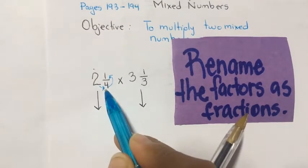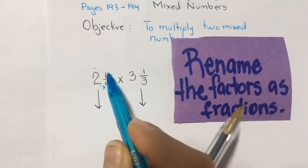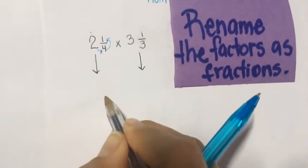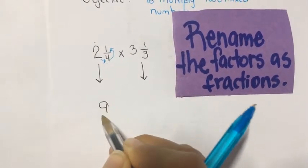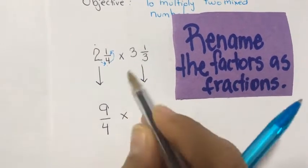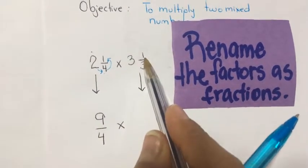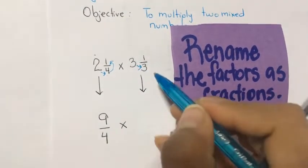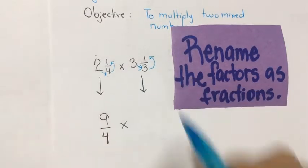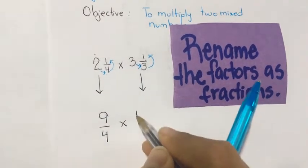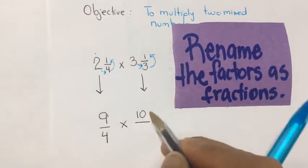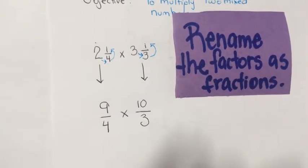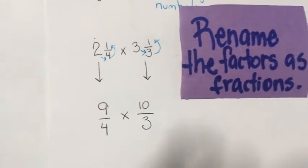Let's rename the first mixed number: 2 times 4 is 8, plus 1 is 9. We write 9 and copy the denominator 4, so we get 9/4. Now rename the second mixed number: 3 times 3 is 9, plus 1 is 10. We write 10 and copy the denominator 3, so we get 10/3.